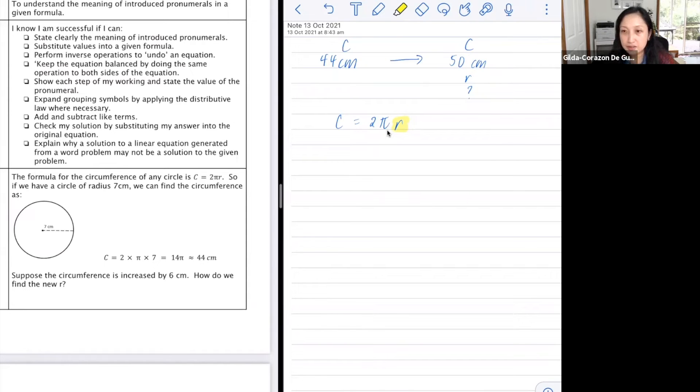So we want r by itself, we want to get rid of the 2 and the π. We want to divide this by 2π. And because we want to keep it balanced, then what we do on the right side, we'd have to do onto the left side. So now we can cancel these, and what we're left on the right side would be r, and on the left is C over 2π. Now, what we want when we are solving an equation is that we want r by itself, and that r, that variable, would need to be on the left side. So we just swap them around, r equals C over 2π.